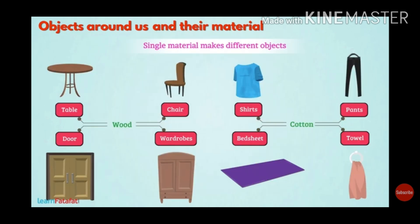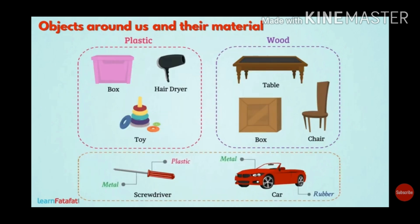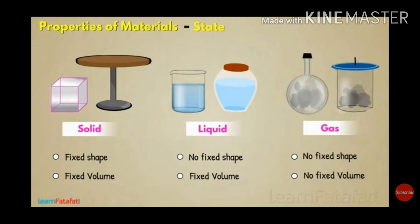One material can be used to make many types of objects — like wood is used to make a table, chair, window, almirah, and doors. Similarly, cotton fiber is used to make carpet, shirt, pant, gown, or sari. Plastic is used to make a hair dryer and toys. Wood is used to make furniture, and metal is used to make a screwdriver. A car is made up of many different materials.